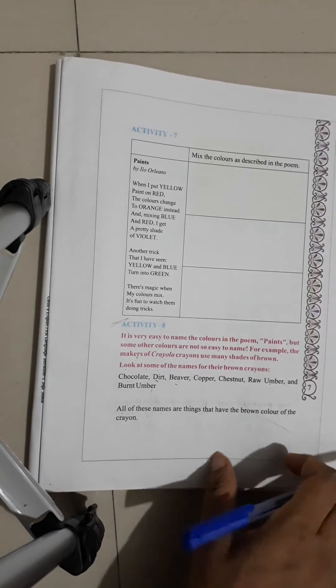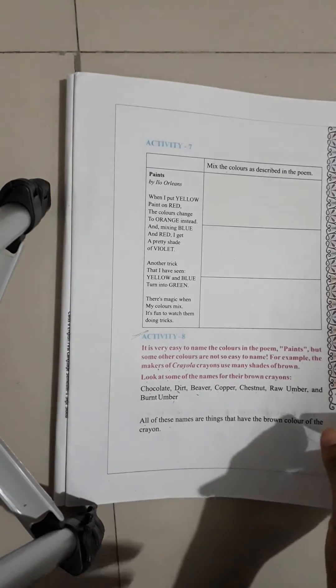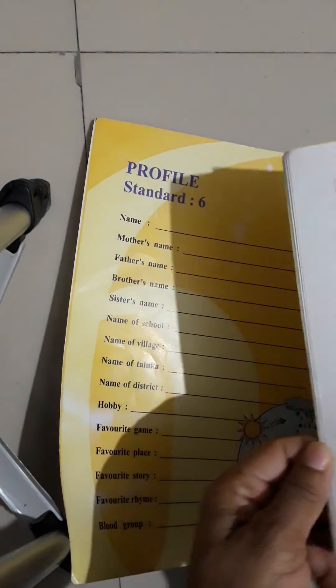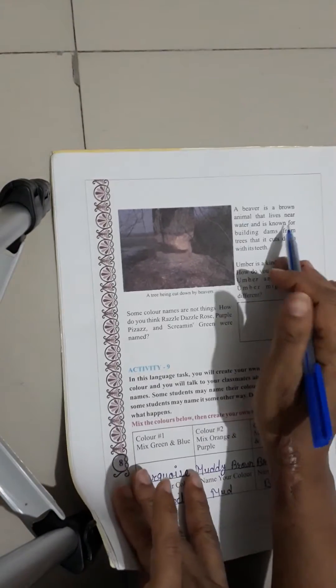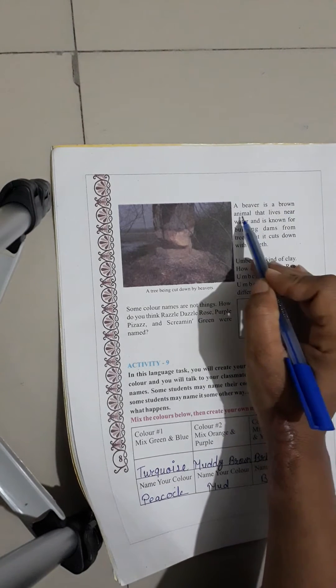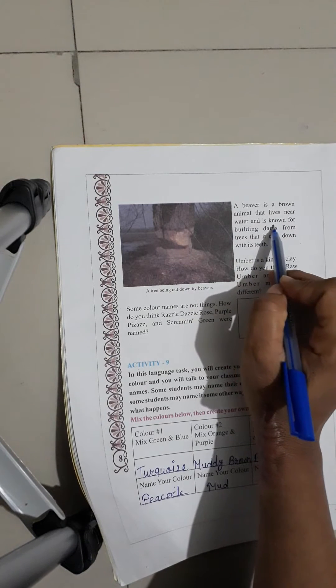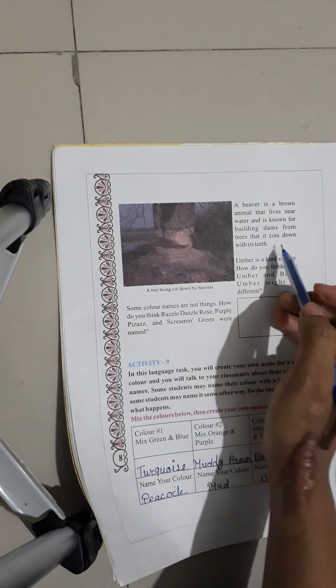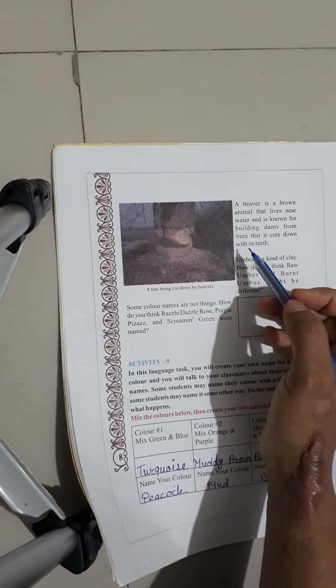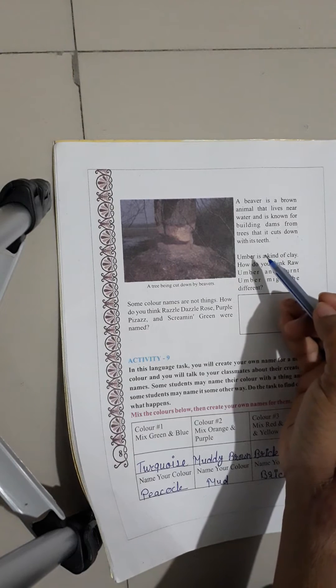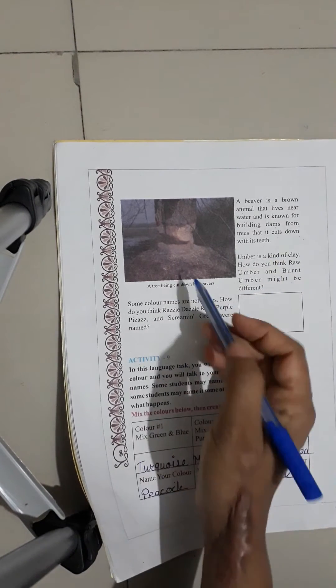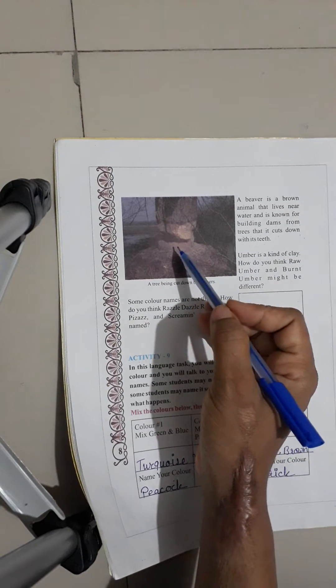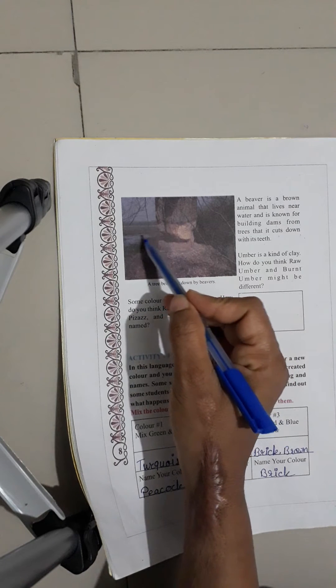A beaver is a brown animal that lives near water and is known for building dams from trees that it cuts down with its teeth. A beaver is a small animal that lives near water. It's a brown color animal. This is a small animal.